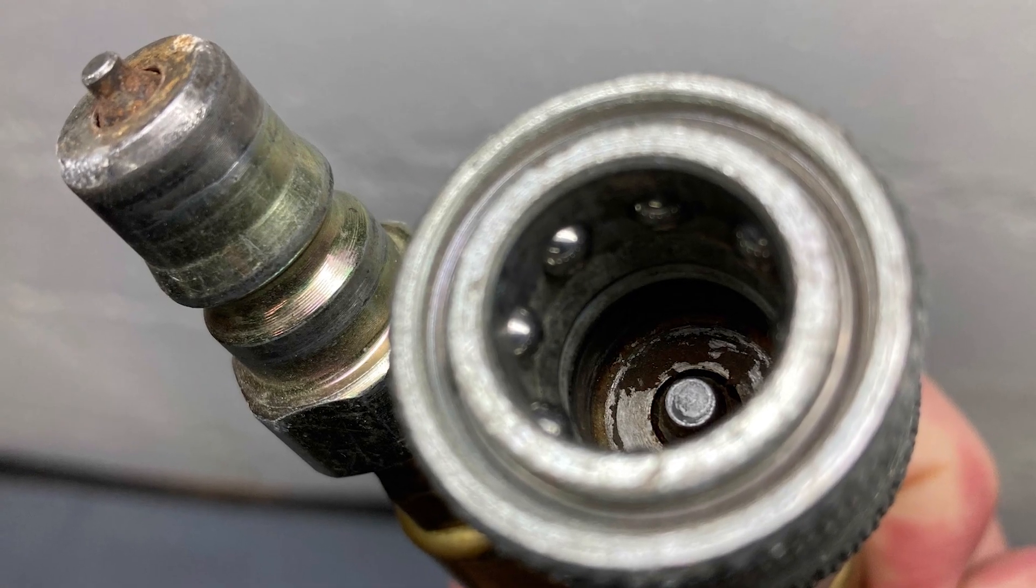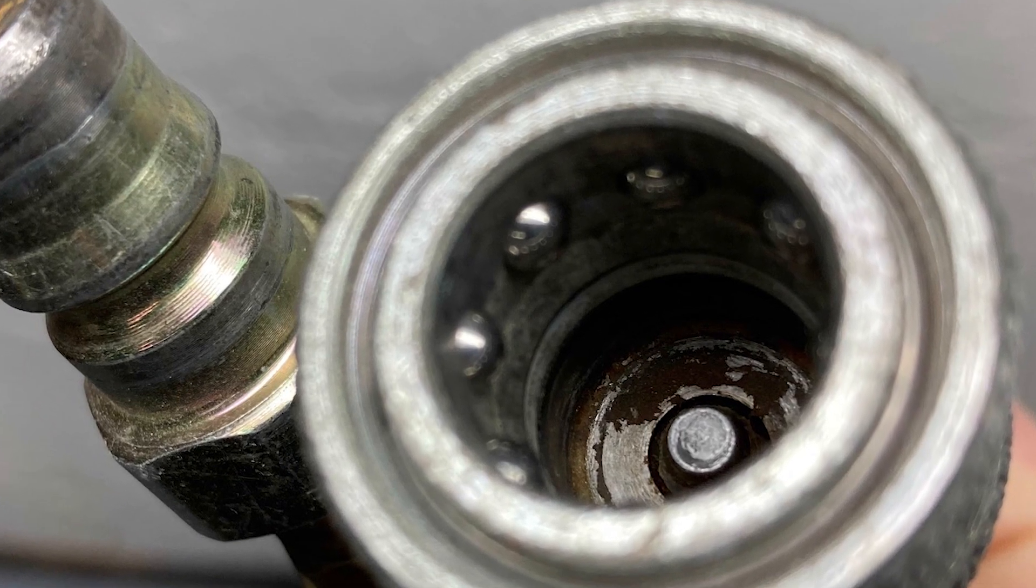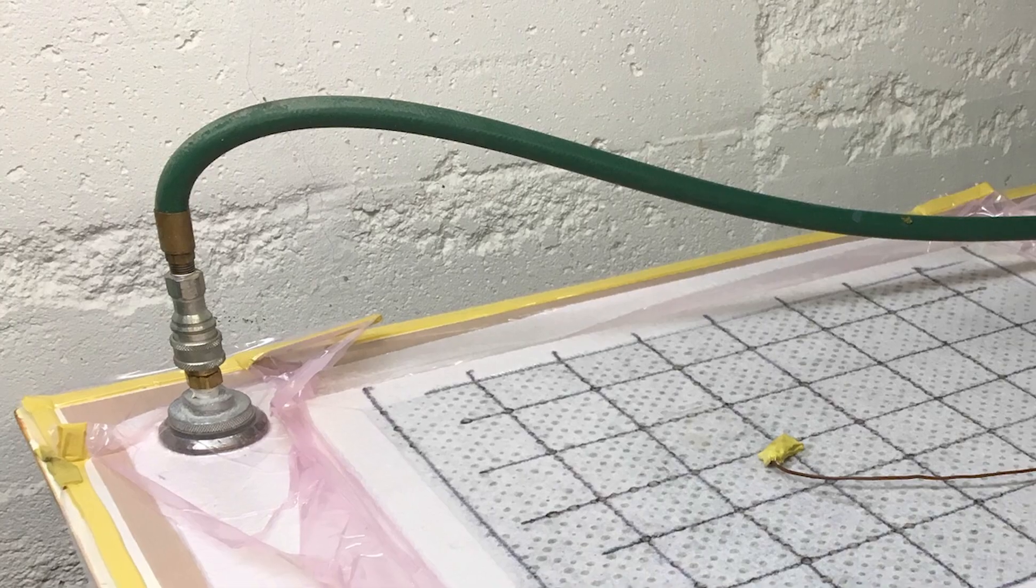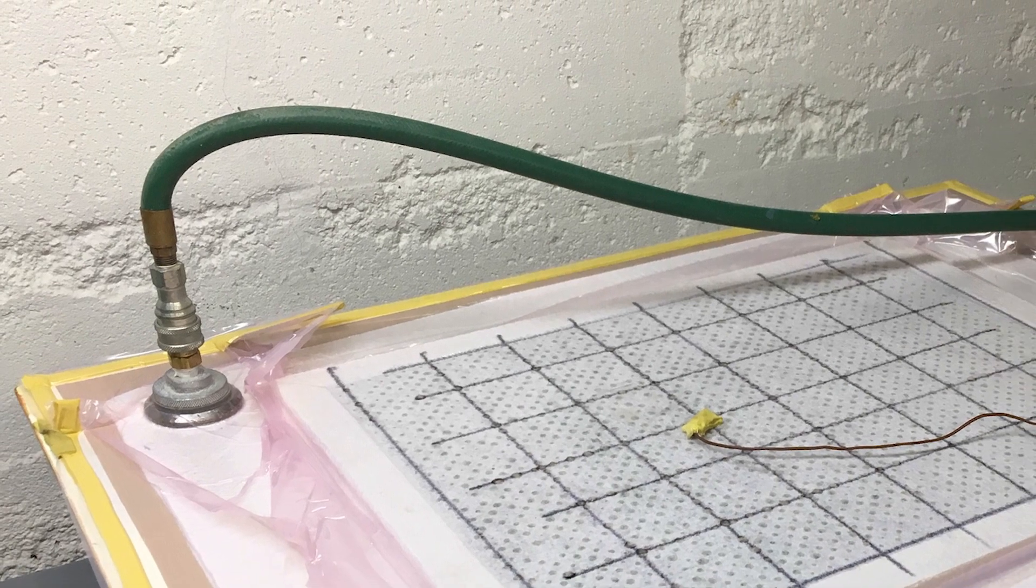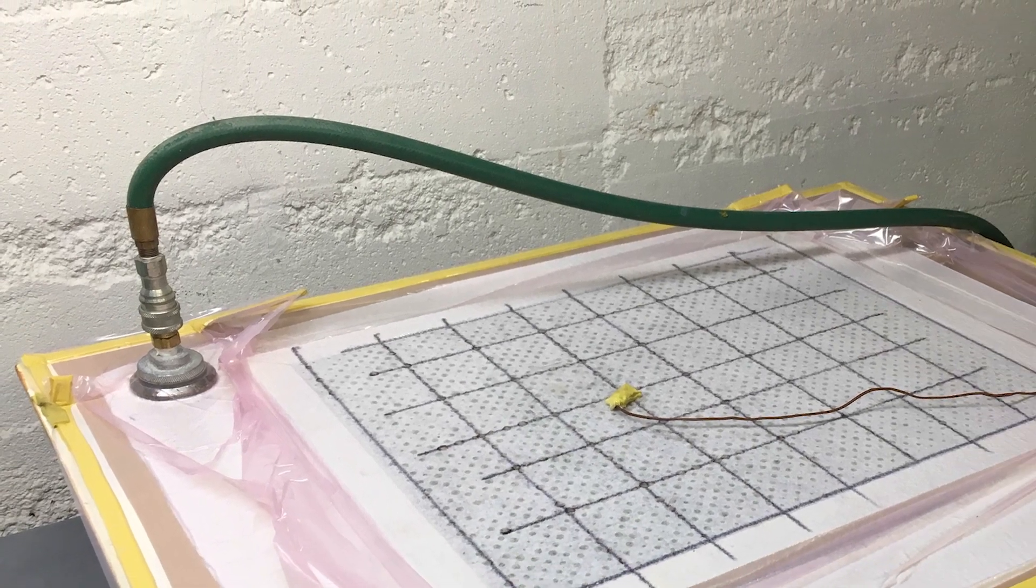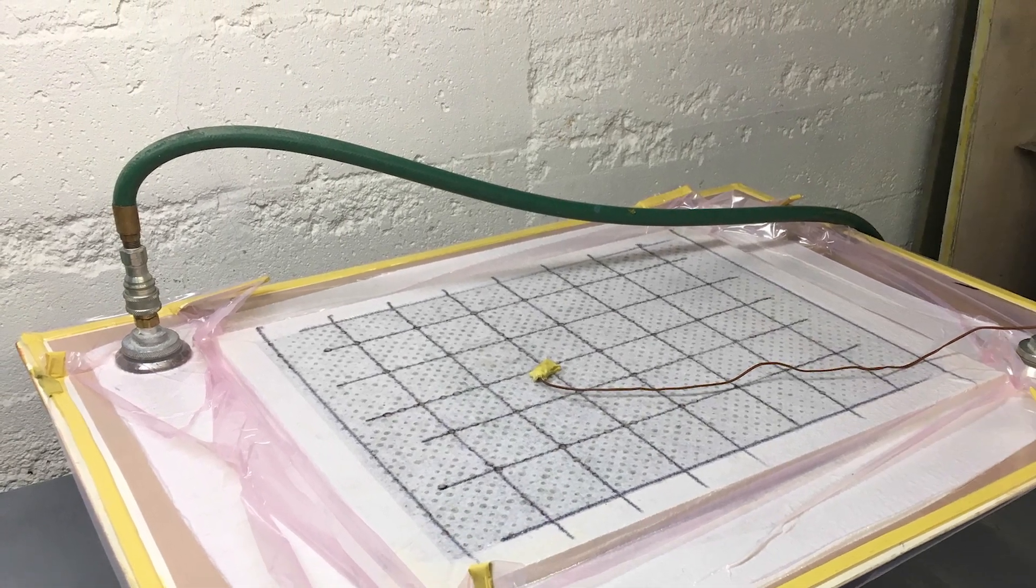Seal material varies, so make sure to get seals that are rated for the temperature you're using. Also, the seals wear out and break, so if you have leakiness that you can't find, you should be suspicious of your fittings.